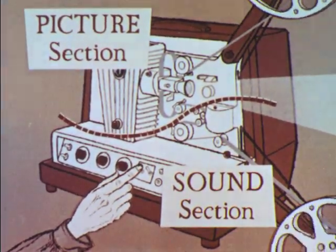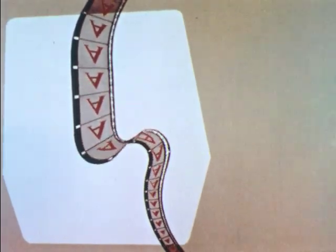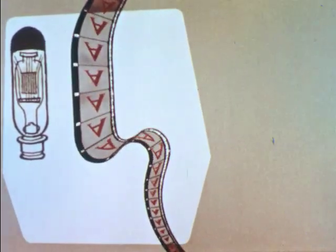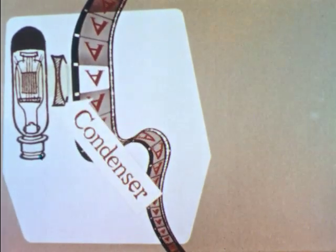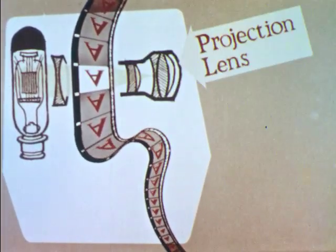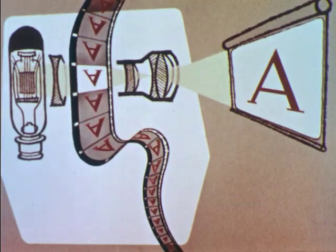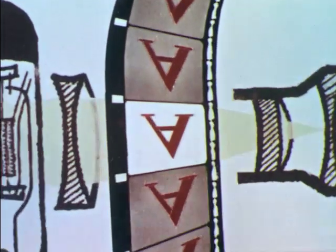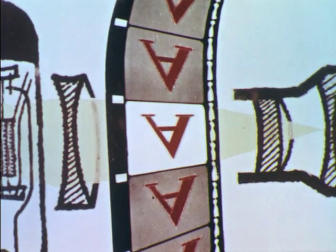As the film moves through the projector, it first enters the picture section. This section consists of the projection lamp, which is a very bright light source. This light is concentrated on a single frame of the film by a condenser lens. The brilliantly illuminated frame of the film is projected by the projection lens onto the screen. The lens is moved to focus the picture. As the film moves through the picture section, it pauses on each frame. In a sound projector, this happens 24 times a second.